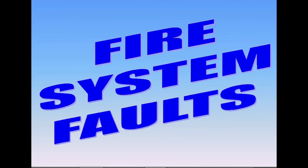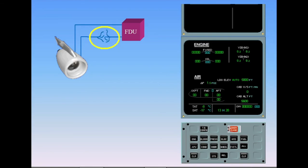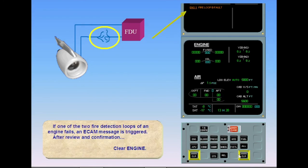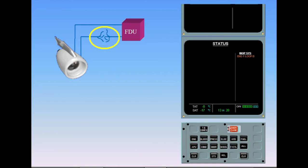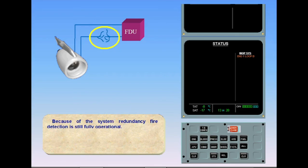If one of the two fire detection loops of an engine fails, an ECAM message is triggered. After review and confirmation, clear engine. Because of the system redundancy, fire detection is still fully operational. Let's see what happens when you lose the second loop.